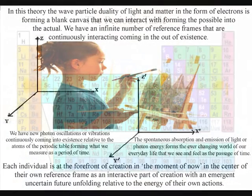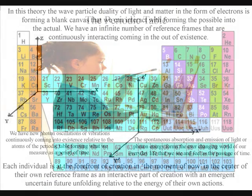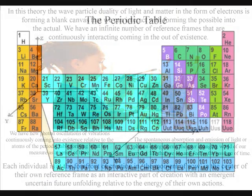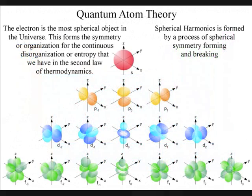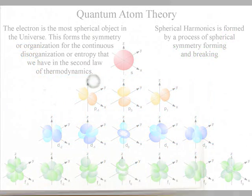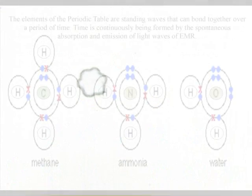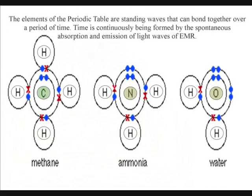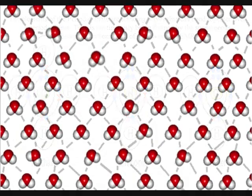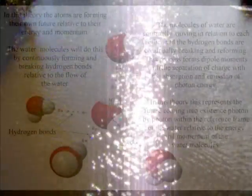We have new photon oscillations or vibrations continuously coming into existence relative to the atoms of the periodic table, forming what we measure as a period of time. The atoms form standing waves in time with the spontaneous absorption and emission of light or photon energy, forming the ever-changing world of our everyday life that we see and feel as the passage of time.